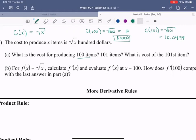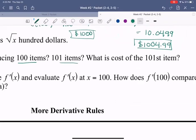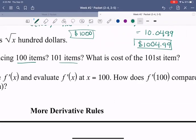And so now that's in hundreds of dollars. So if you want, you could write that instead as 1,004.99. So now the next question says, what is the cost of the 101st item? So essentially that means how much more does it cost to produce 101 items versus 100 items? So to produce that one extra item, how much does it cost?